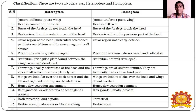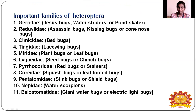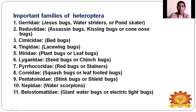Heteroptera are herbivorous, predaceous, or blood-sucking, while Homoptera are only herbivorous. There are 11 important families of Heteroptera: Gerridae, Reduviidae, Cimicidae, Tingidae, Miridae, Lygaeidae, Pyrocoridae, Coreidae, Pentatomidae, Nepidae, and Belostomatidae.